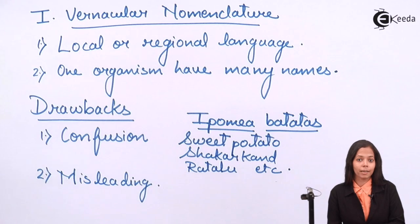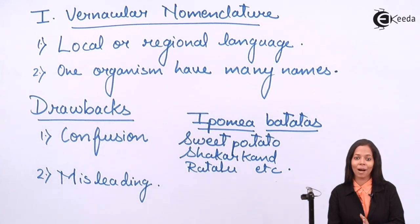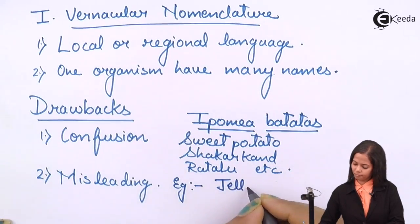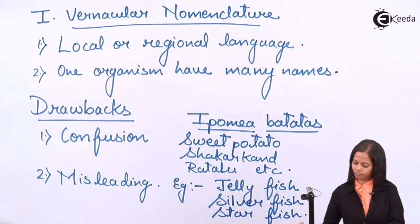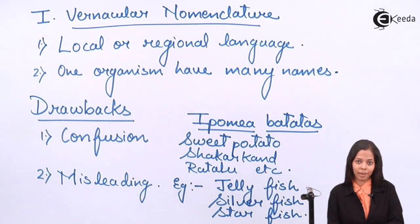For the drawback of misleading names, the examples are jellyfish, starfish, and silverfish. When you hear these words, the image that comes to mind is of a fish, but none of the three are actually fish. Jellyfish belongs to Cnidaria, silverfish is an insect, and starfish is an echinoderm — we will study about them in Kingdom Animalia.